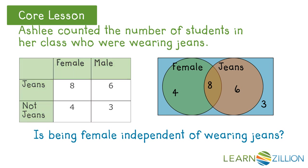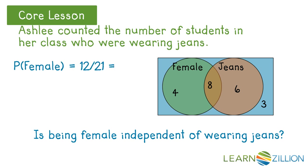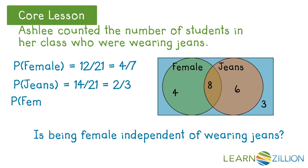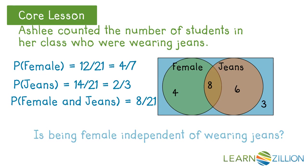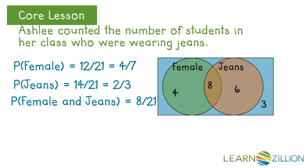Let's look at some individual probabilities. The probability of being female in this class is twelve over twenty-one. The probability of wearing jeans, where there are fourteen students who wear jeans of the twenty-one, is two over three. The probability of wearing jeans if you're a woman is eight over twenty-one — that's eight in the intersection over twenty-one. Notice the relationship: four over seven multiplied by two over three equals eight over twenty-one. That's not a coincidence — that is a property of being independent.